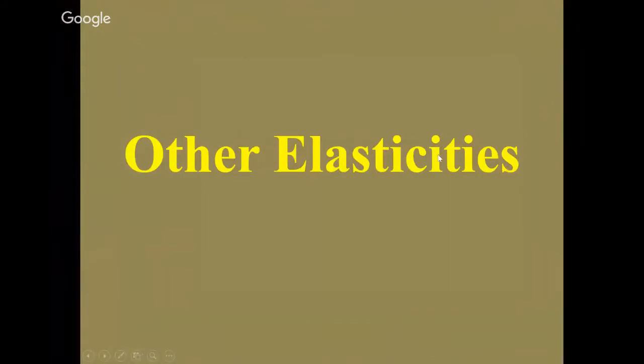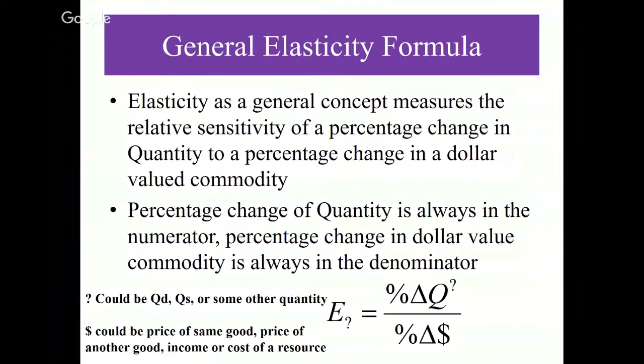The general elasticity formula is given on this slide. It's a concept that measures the relative sensitivity of a percentage change in some quantity related to a percentage change in a dollar value commodity. The percent change of quantity is always in the numerator and percentage change in dollar value commodity is always in the denominator. E sub question mark equals percent change in quantity question mark divided by percentage change dollar sign. The question mark could be QD for quantity demanded or QS for quantity supplied or something else. The dollar sign could be the price of the same good, price of a different related product, income of consumers, or cost of a resource. If you forget a specific elasticity formula, if you can get percentage change quantity above percentage change of whatever's in dollars, you've got the formula at least and can simplify it.